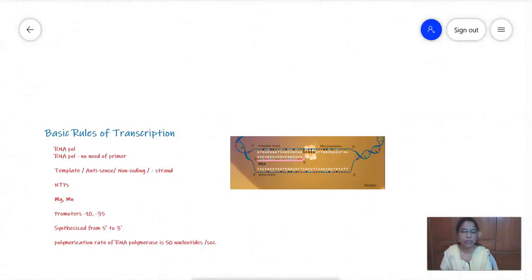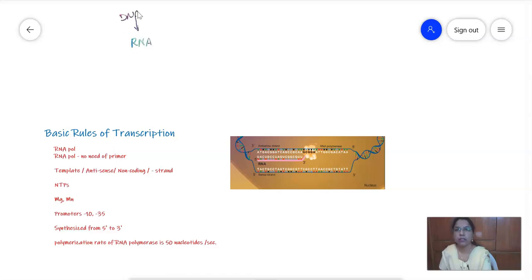Hi friends, welcome once again to another session on transcription. We will discuss the basic rules of transcription today. Transcription is the synthesis of RNA from DNA, and the enzyme required is called RNA polymerase. In the presence of RNA polymerase, the process of transcription takes place.